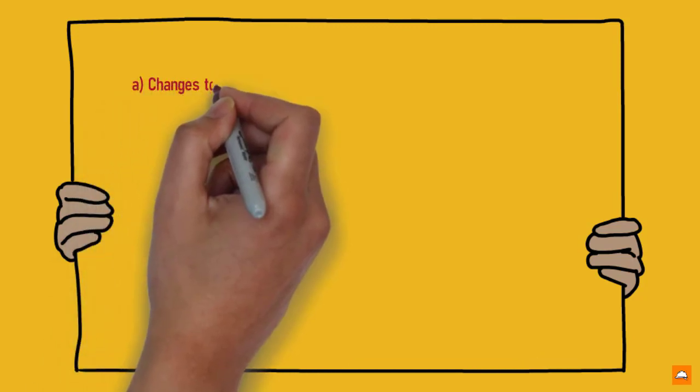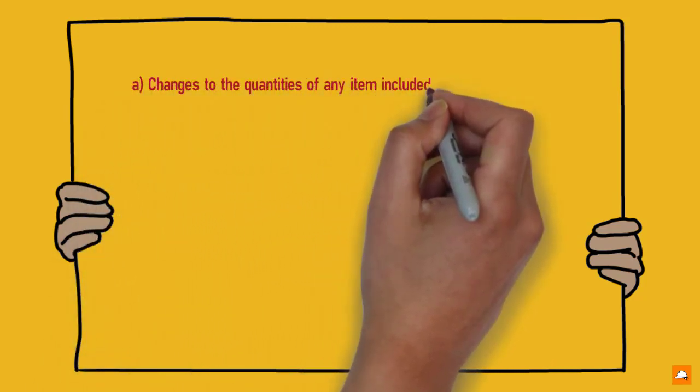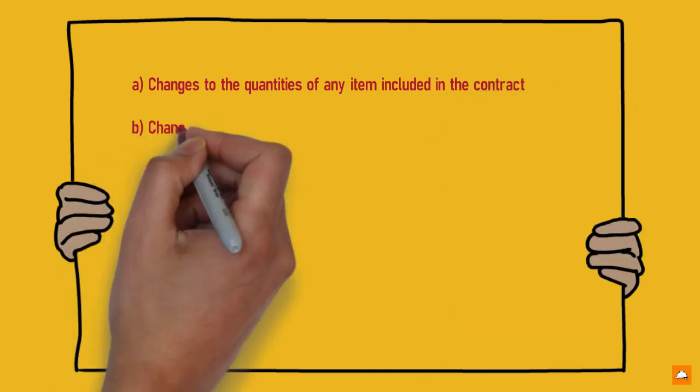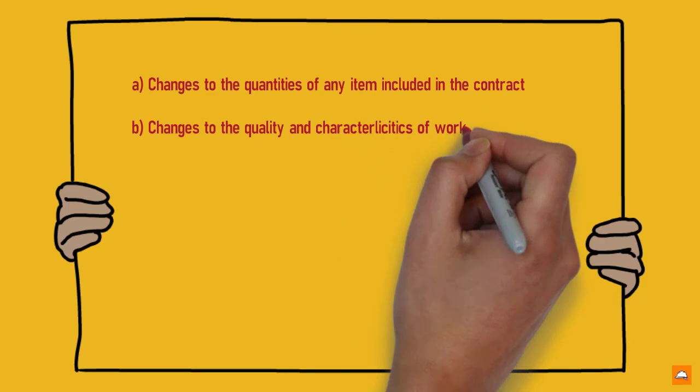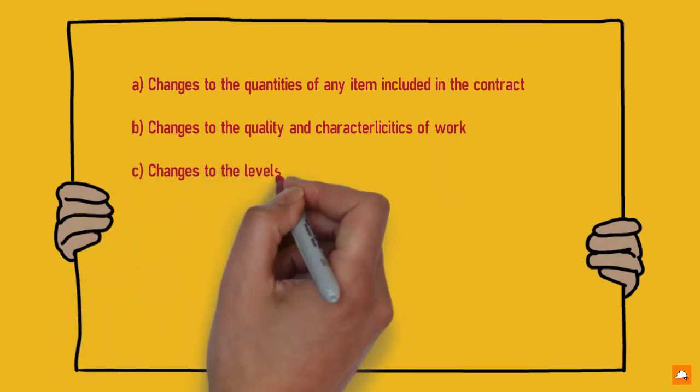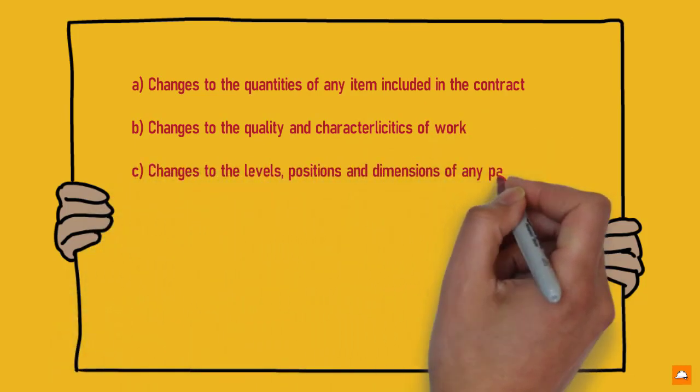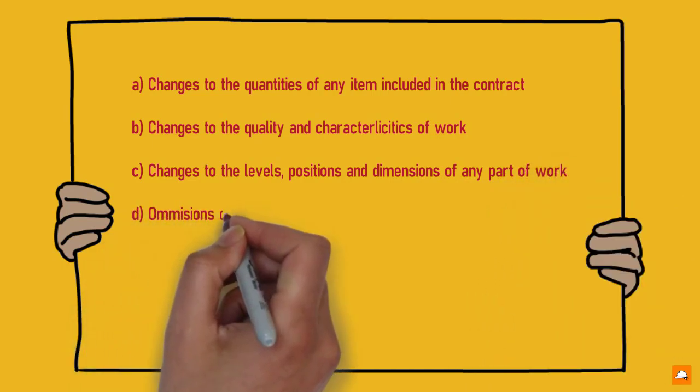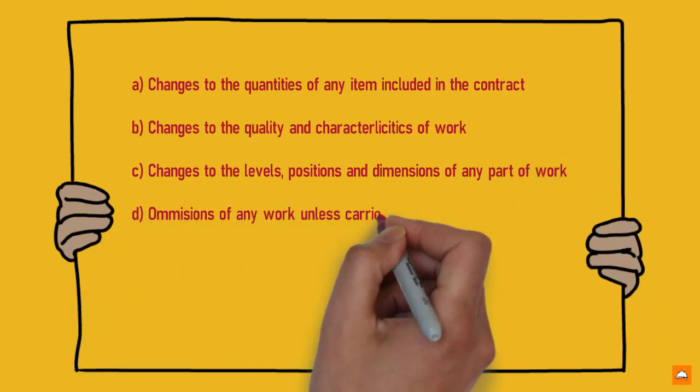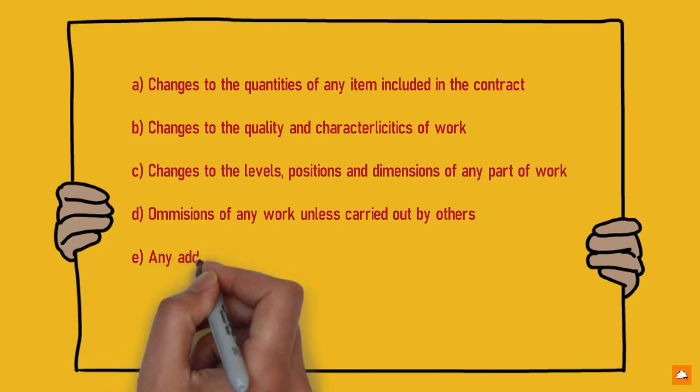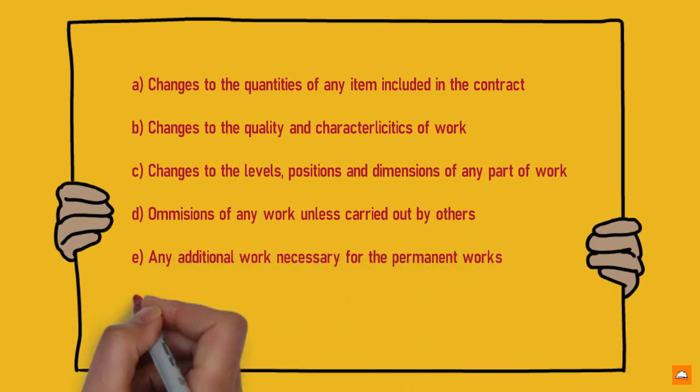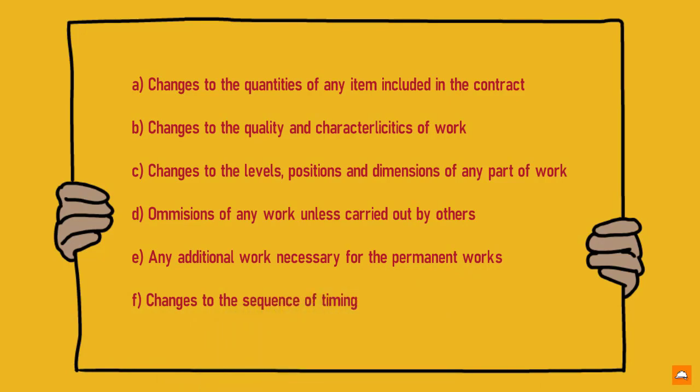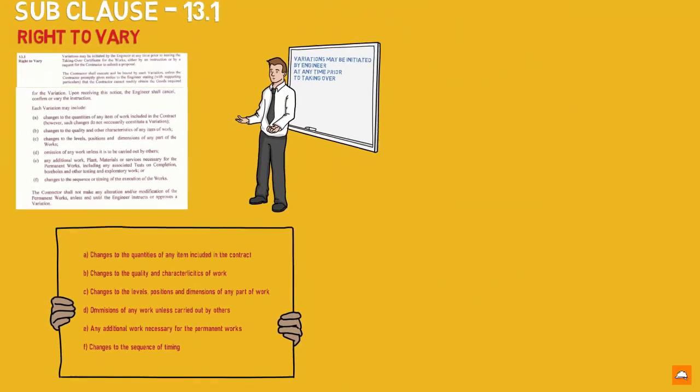Also this subclause goes on to illustrate that variations may include: A, changes to quantities of any item included in the contract; B, changes to the quality and characteristics of work; C, changes to the levels, positions and dimensions of any part of work; D, commissions of any work unless carried out by others; E, any additional work necessary for the permanent works; F, changes to the sequence of timing.